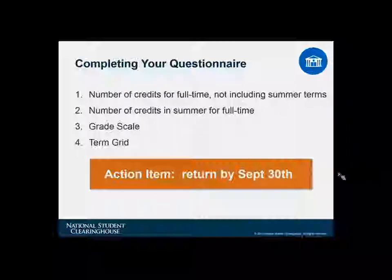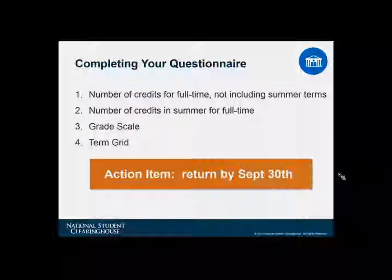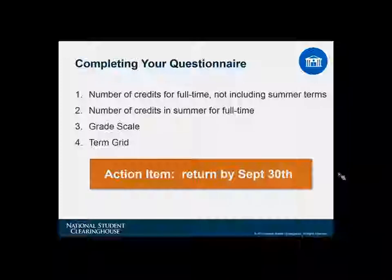For our Frontier Set friends who have previously submitted data to us, what we require is an updated term grid for the entire academic year of 2017-18. Some of you had already submitted that information with your previous submission, but others were not able to provide the spring and summer dates at that time. If you were amongst that group, please do send us an updated term grid. If there are any changes to the credit thresholds at your institutions or perhaps the grade scale, you can include those changes as well. Please return these to us by September 30th. The questionnaire will be distributed at the end of this week.